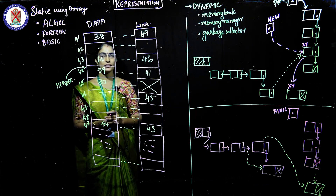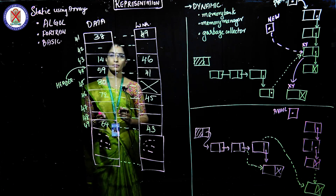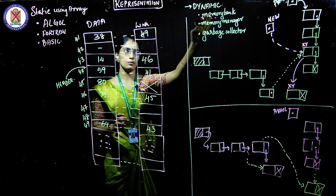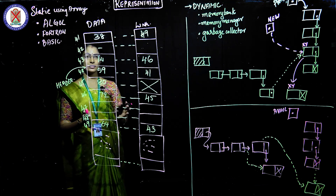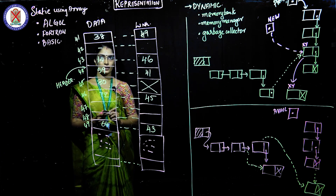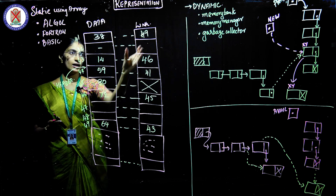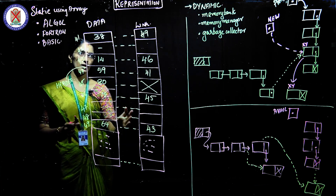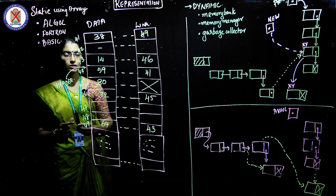Next we will see the representation of linked list in memory. Linked list is mainly represented in memory using two strategies: one is static, using arrays, and the other is dynamic allocation. Mostly linked list is used with dynamic memory allocation. Before explaining the array-based representation, I want to introduce the concept of a header node.